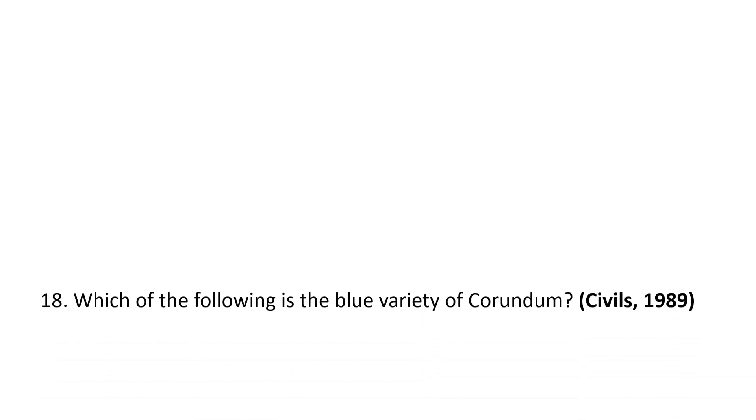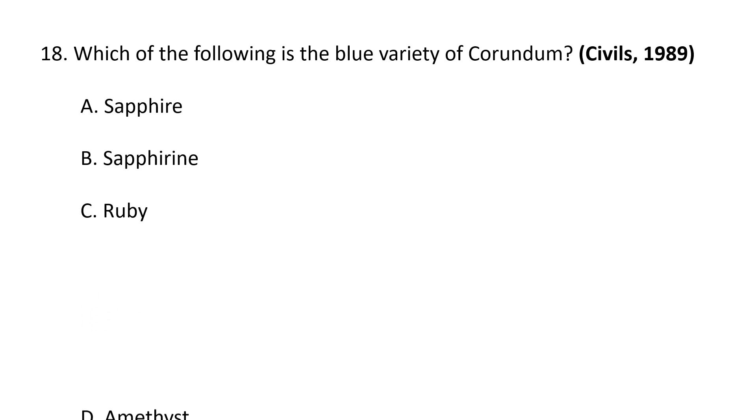Next question. Which of the following is the blue variety of corundum? A. Sapphire, B. Sapphirine, C. Ruby, D. Amethyst. So obviously sapphire is the blue variety of corundum.